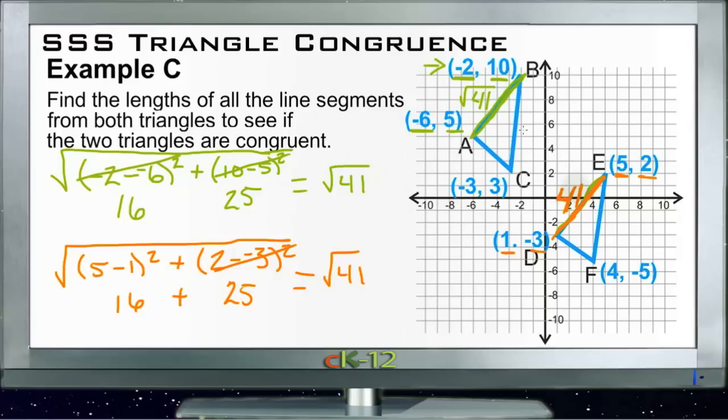Now you can use the same process to verify that BC is the same length as EF, and that AC is the same length as DF. Assuming that's the case, you will show that the two triangles are indeed congruent.